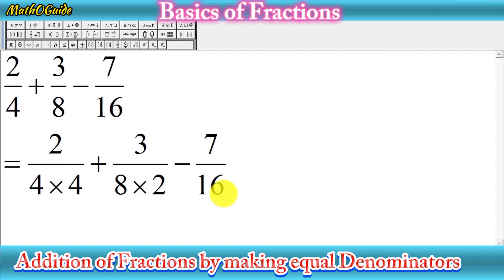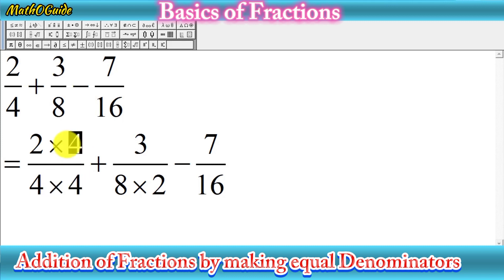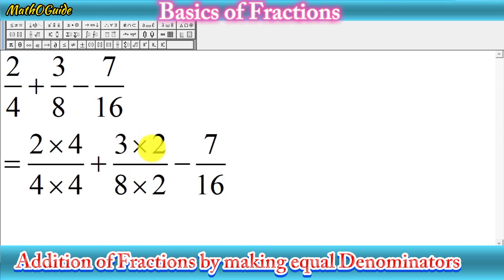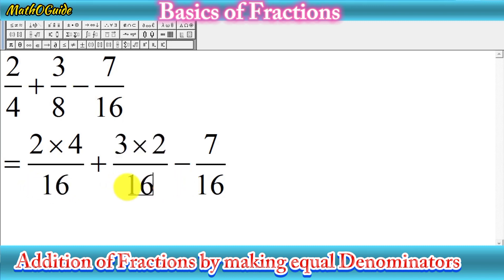We multiply four by four to get sixteen, and eight by two to get sixteen. When you multiply the denominator of a fraction by a number, you must multiply the numerator by the same number to keep the fraction balanced. So we multiply both parts of the first fraction by four, and both parts of the second fraction by two — meaning three multiplied by two. Now all denominators equal sixteen.